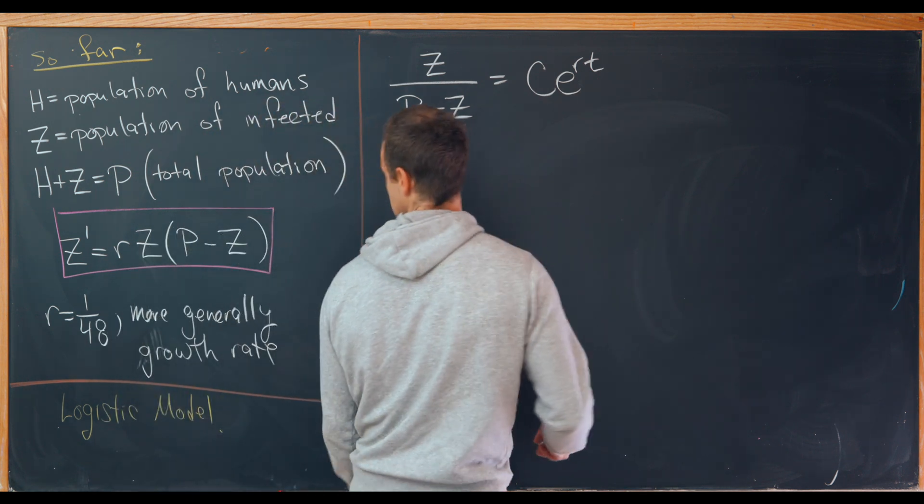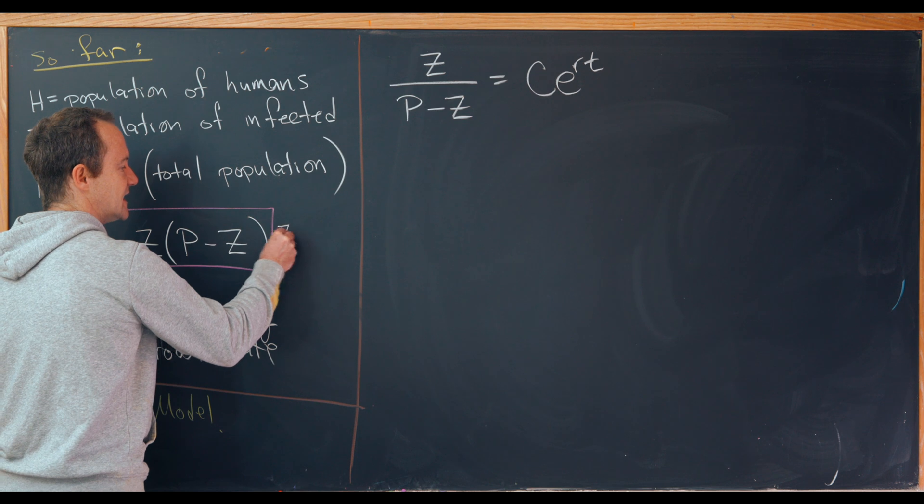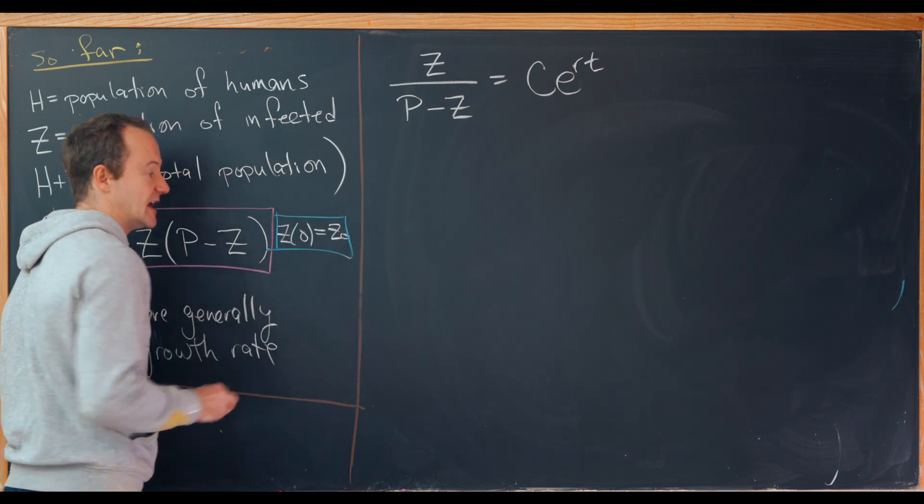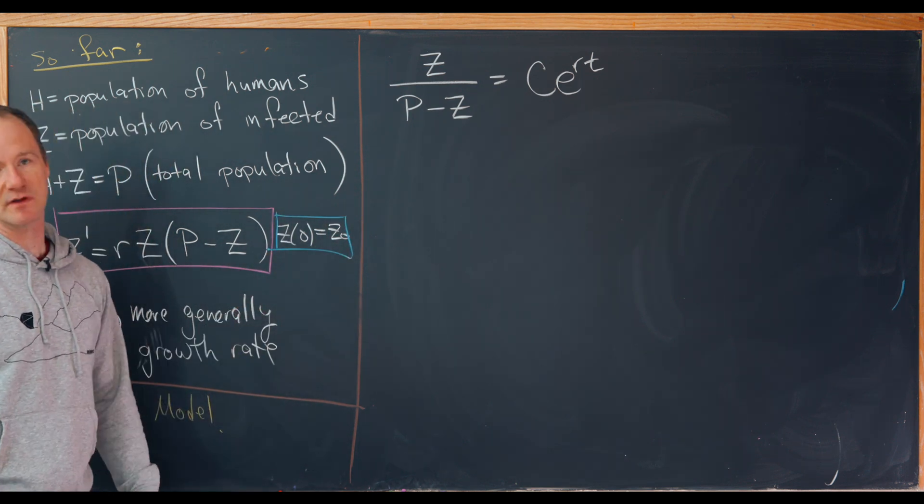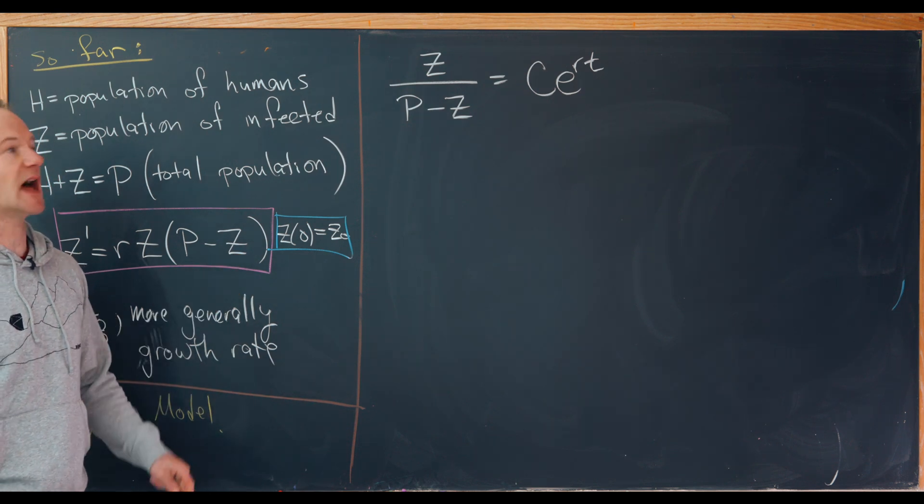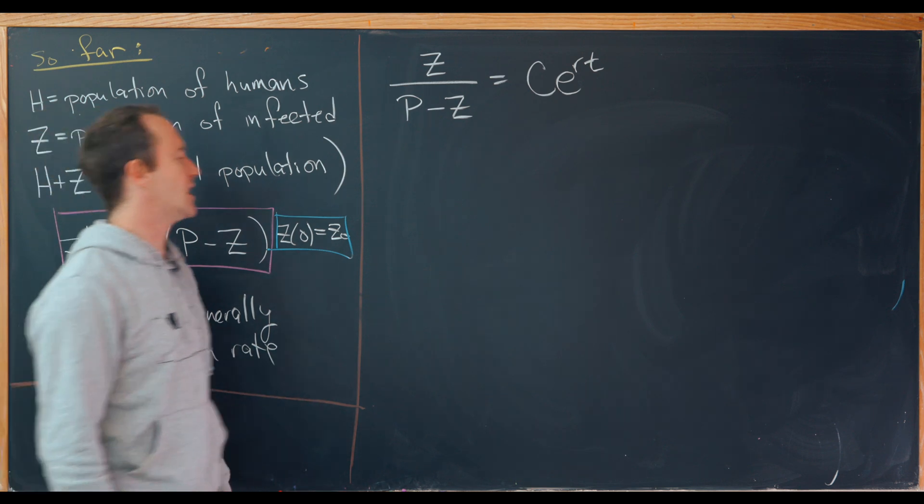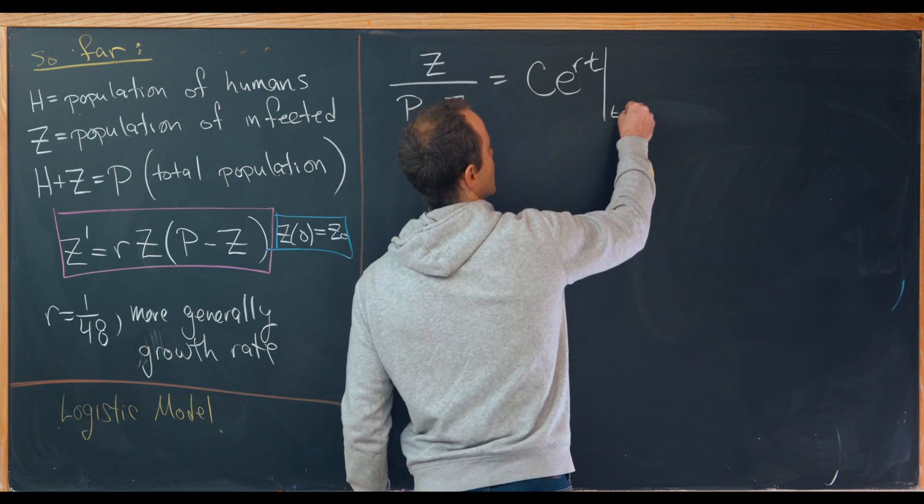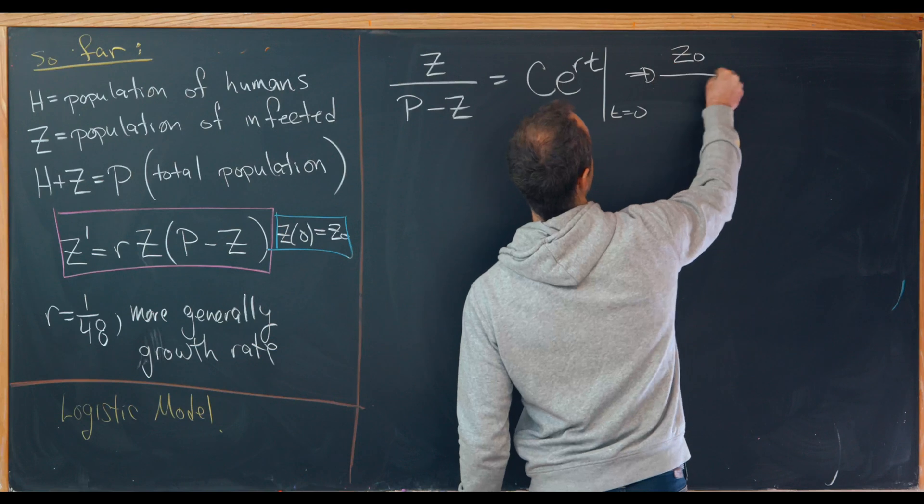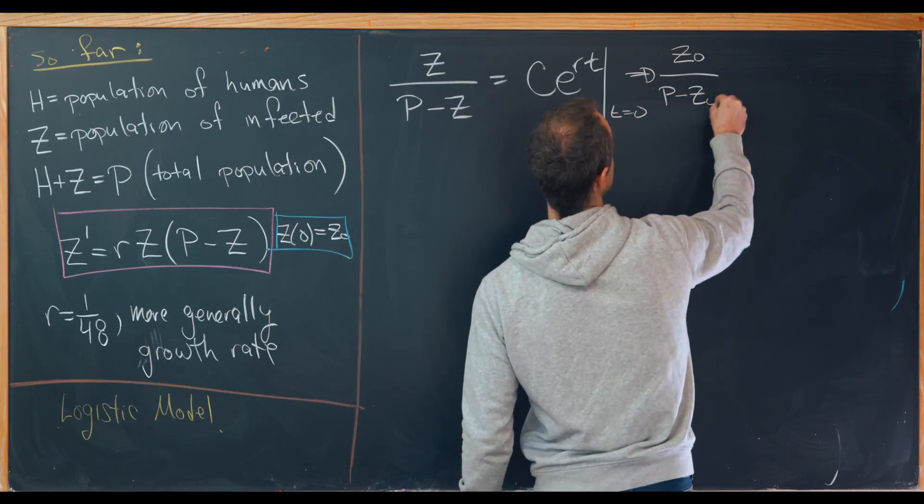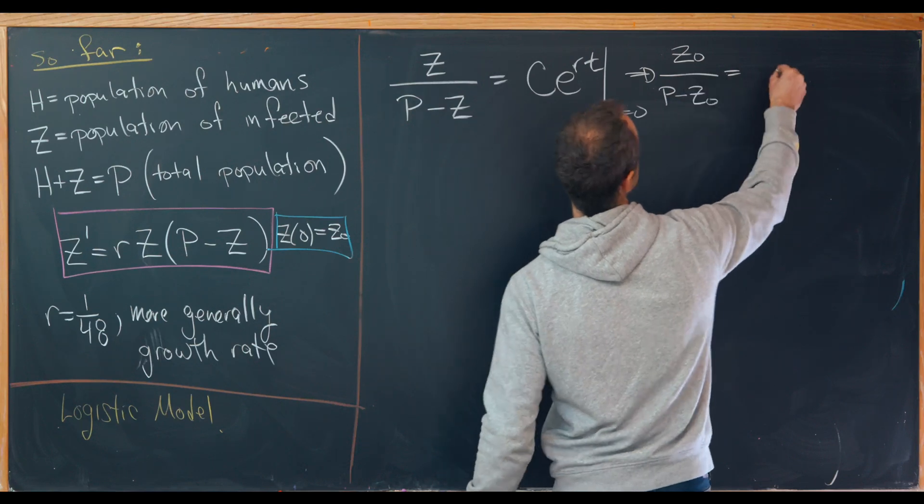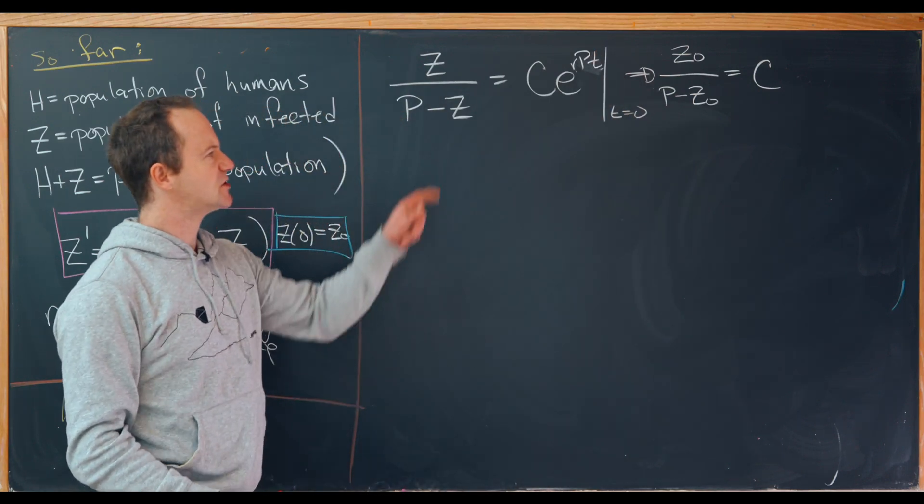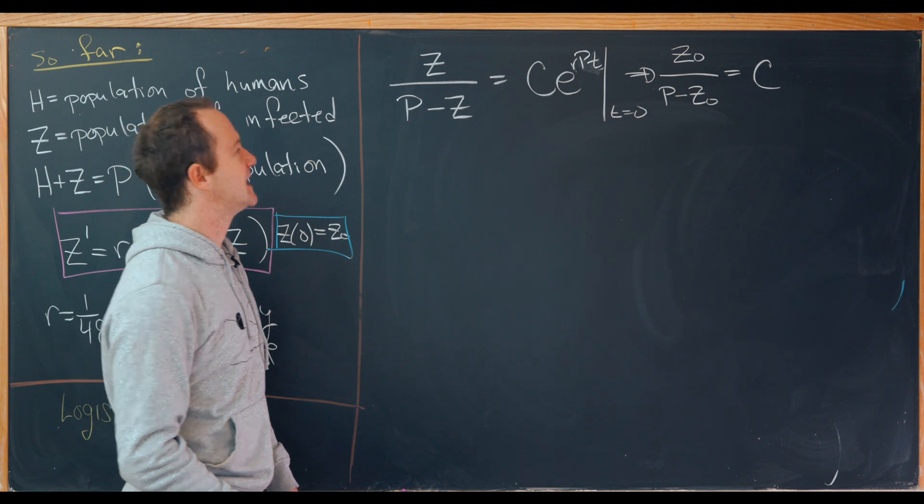But before we do that, let's say over here that we also know that Z evaluated at zero is equal to Z naught. And I haven't heard any data out of the resistance. I'm not sure what the initial population of the infected was. But maybe you could look into that and see what you get. So now let's plug T equals zero into this equation and see what we get. So plugging in T equals zero, that will give us Z naught over P minus Z naught equals C times E to the zero, which is just C. And I realized I missed a P here. That is R times P times T. So that's our constant. So that's our constant. So that's good to know.